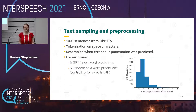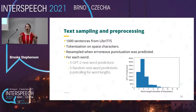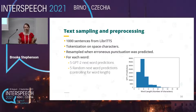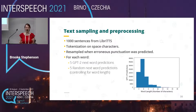For evaluation, we selected 1,000 sentences from the LibriTTS corpus. We implemented a tokenization policy where we split sentences on space characters, and resampled if the first character of the prediction was not a space, to eliminate erroneous punctuation predictions which have a very negative effect on prosody. For each word, we predicted 5 GPT-2 next word predictions using top-30 sampling, and 5 random next word predictions taken from a list of 1,000 of the most frequent words in English.